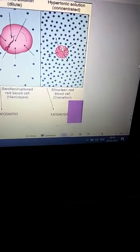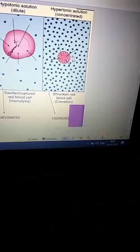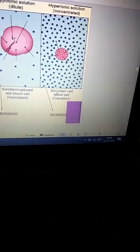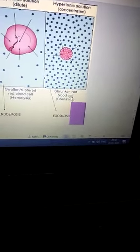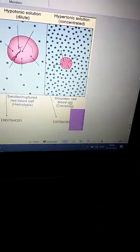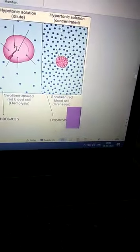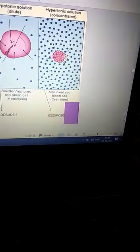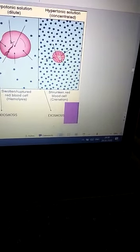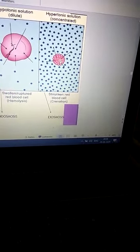That means, jo aapka cell hai, uho apne shape ko completely lose kar dega. It will become shrink. For example, red blood cell hai. Red blood cell ko aapne eek aise solution me lag rakhha hai, joh bilkul salt se bhera hua hai. It is very hypertonic. What will the RBC do? It will start losing water. So, when it loses water, it becomes shrinked. And this kind of cell difference is known as crenation. And what do we call this process? Exosmosis.